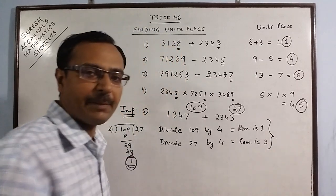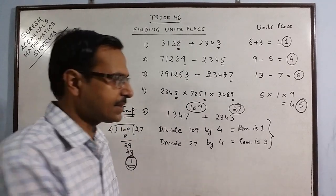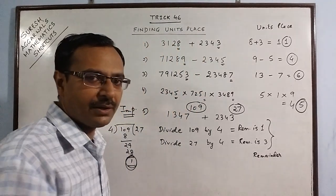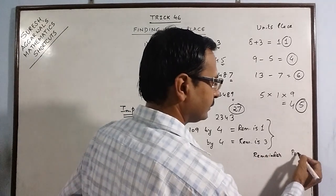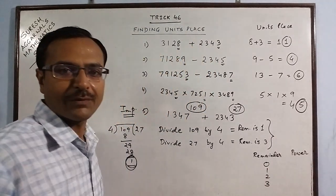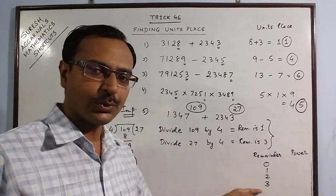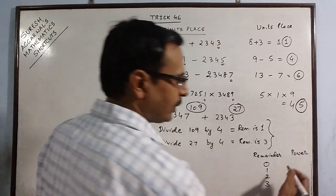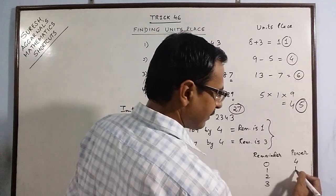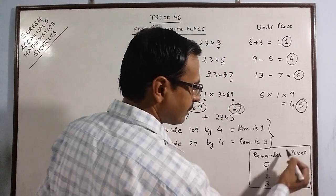There is a small table to remember. Based on the remainder when dividing the power by 4: if the remainder is 0, you take the power as 4. In all other cases, the remainder and power remain the same — remainder 1 gives power 1, remainder 2 gives power 2, remainder 3 gives power 3. Remainder cannot be 4 or more since we are dividing by 4. This small table is what you need to remember for finding the unit's place in power-based questions.